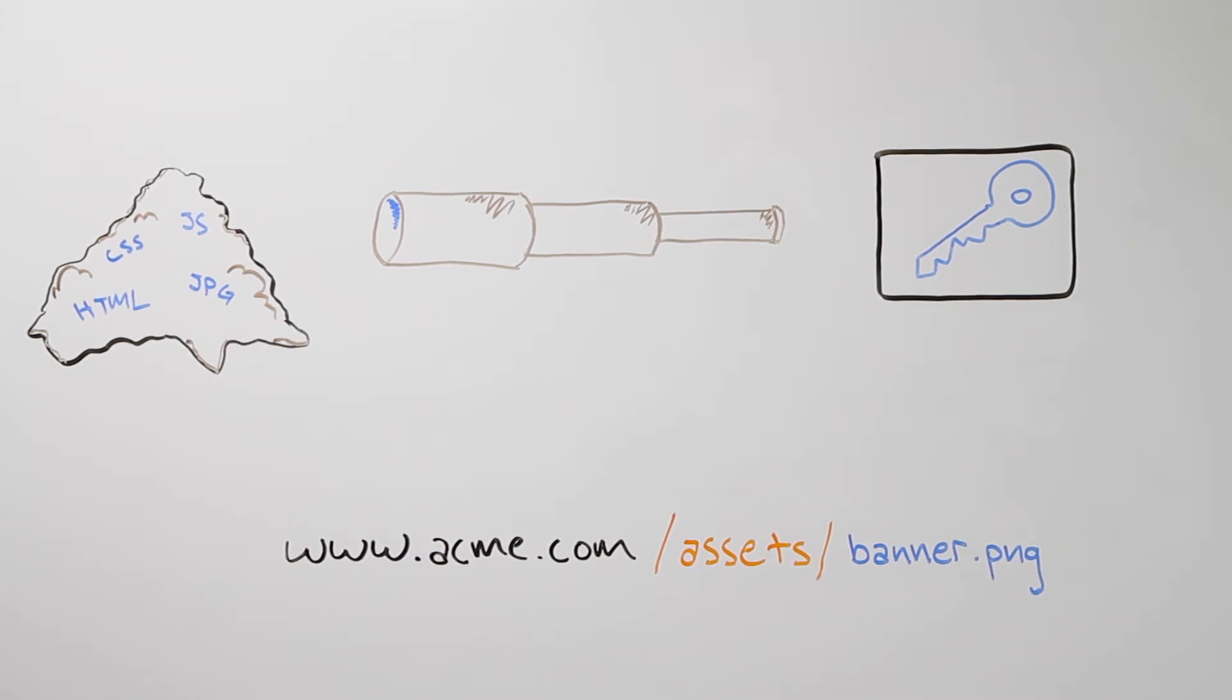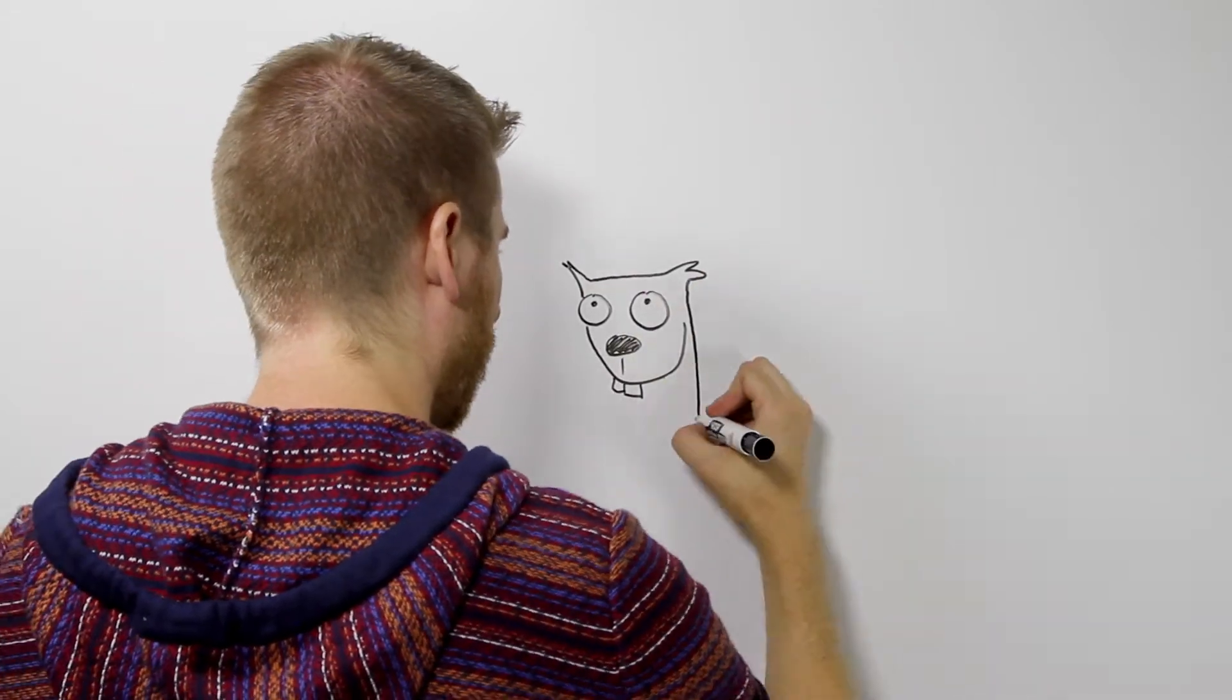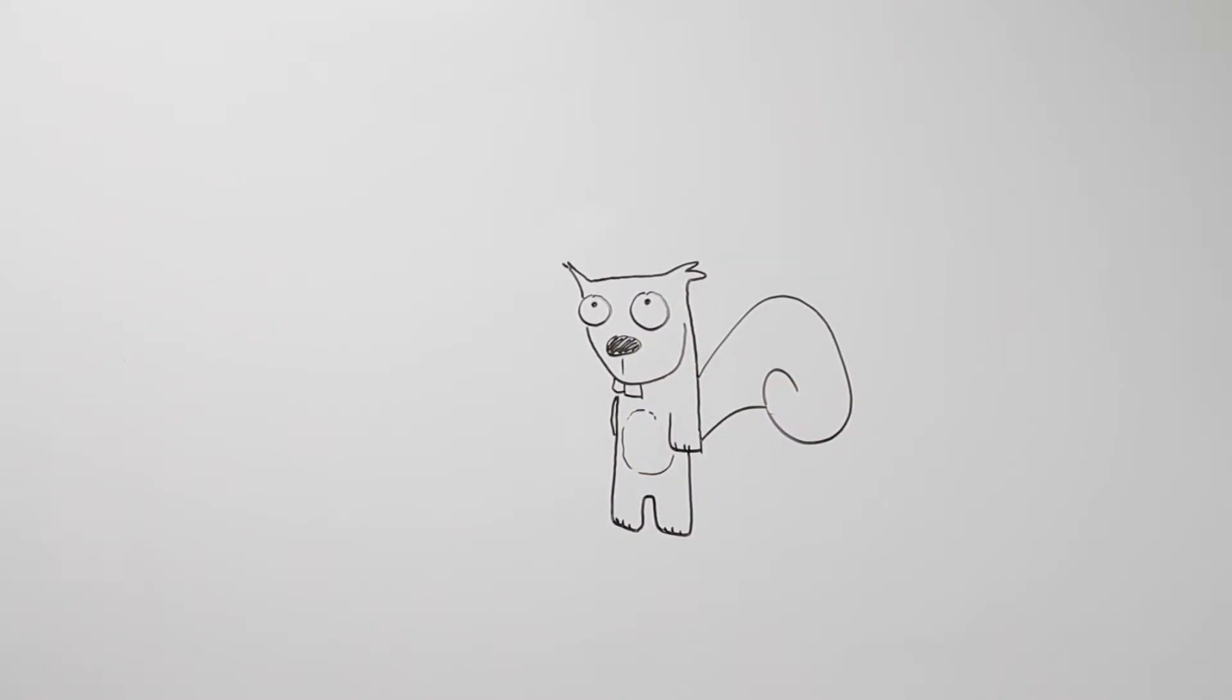If you're familiar with databases, think of this as the primary key we would use to find your files in our cache. Or, if you're a squirrel, think of this as the color, smell, and shape which would help us identify the right acorn for you.